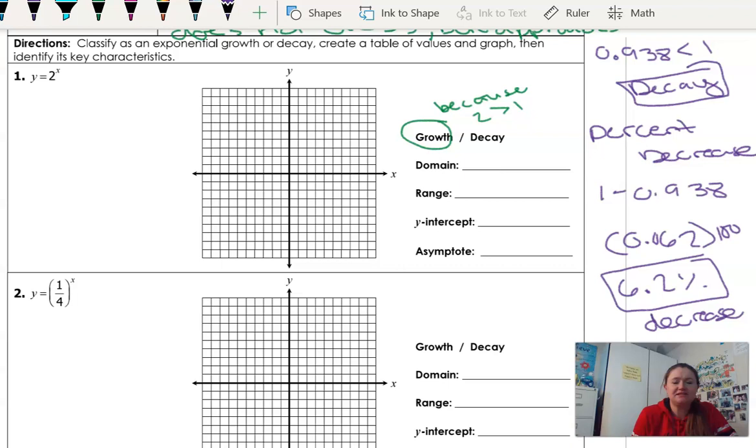Alright, part B is going to ask us to actually decide what the graph of the function will look like. I made it multiple choice because that just kind of makes it easier for you to answer and for me to grade.